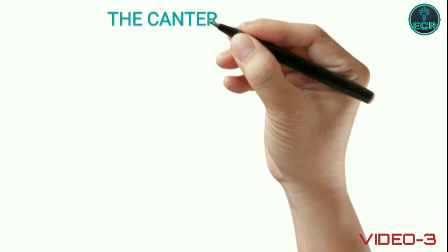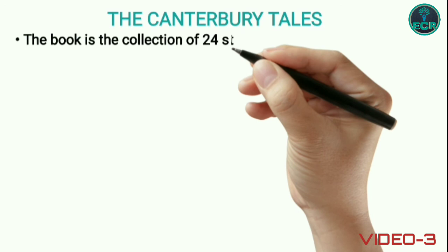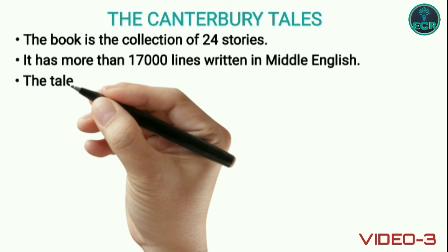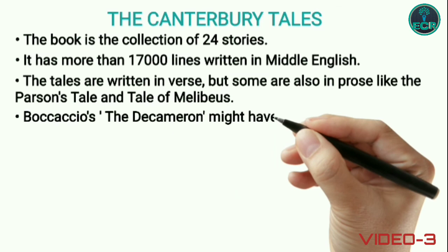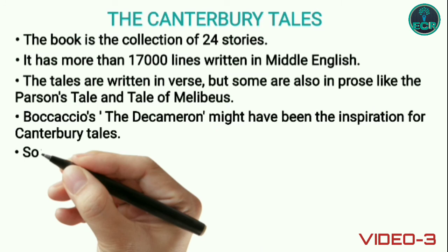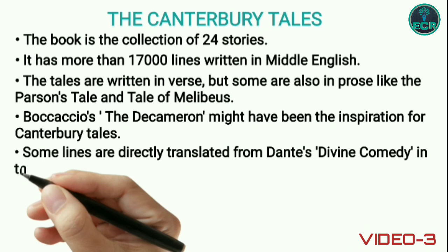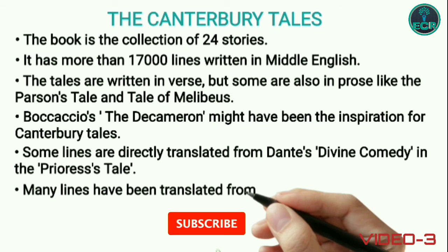The Canterbury Tales is a collection of 24 stories. It has more than 17,000 lines written in Middle English. The tales are written in verse, but some are also in prose, like The Parson's Tale and The Tale of Melibeus. Boccaccio's The Decameron might have been the inspiration for the Canterbury Tales. Some lines are directly translated from Dante's Divine Comedy in The Prioress's Tale. Many lines have been translated from Boccaccio's Griselda in The Clerk's Tale.